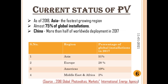As of 2018, Asia was the fastest growing region with almost 75% of global installations. China alone accounted for more than half of the worldwide deployment in 2017. In terms of cumulative capacity, Asia was the most developed region with more than half of the global total of 401 GW in 2017. Europe continued to decline as a percentage of the global PV market. In 2017, Europe represented 28% of global capacity, the Americas 19%, and the Middle East and Africa 2%.